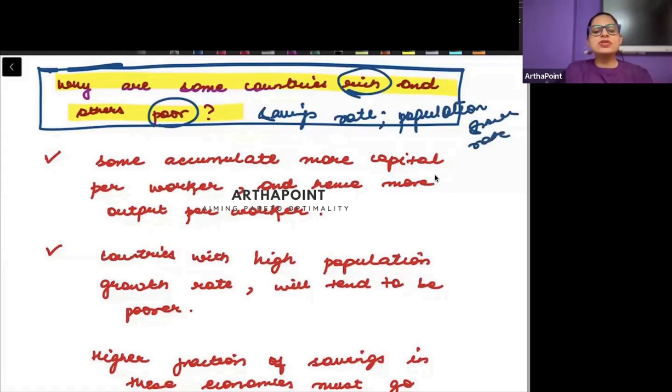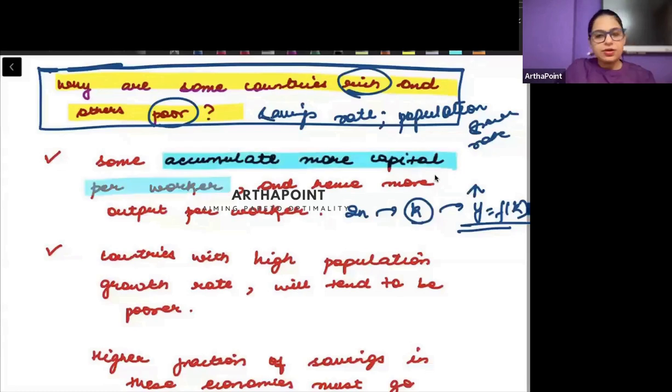Those countries which accumulate more capital per worker, when they invest more, will have more output per worker. If they have more output per worker, they will be richer countries.